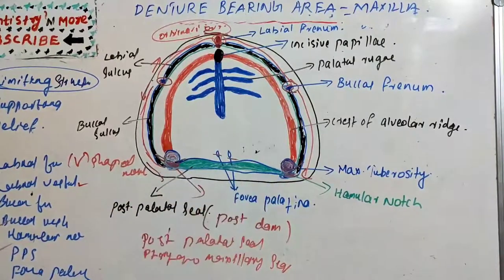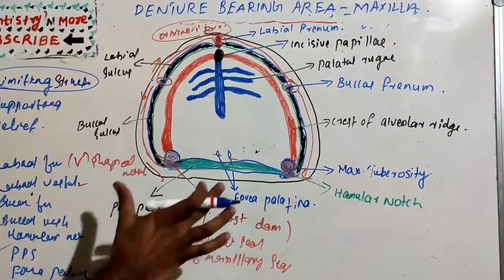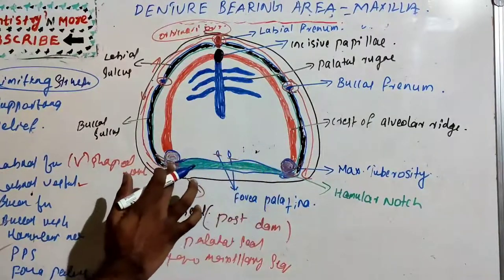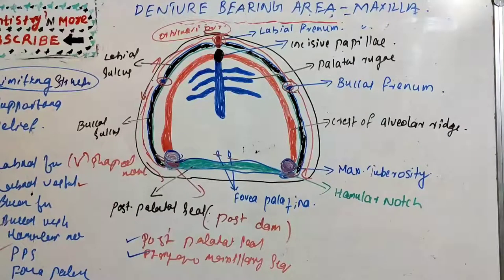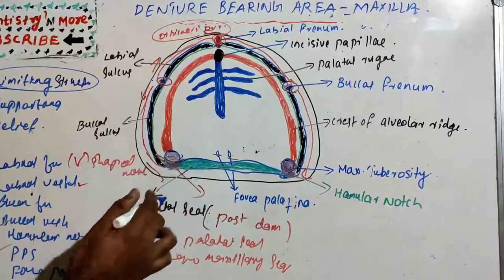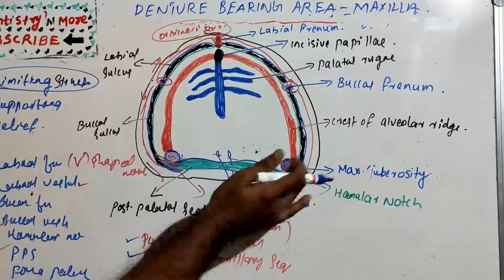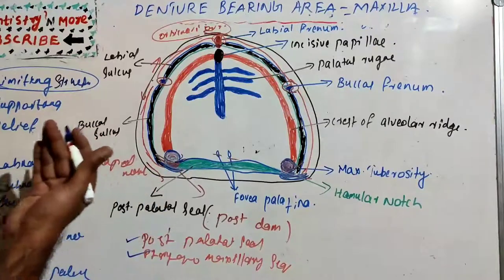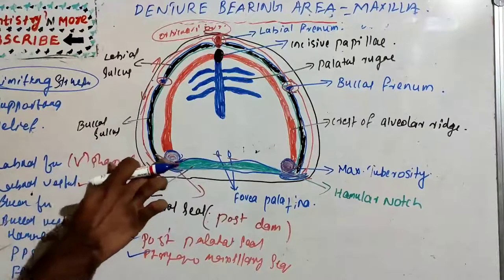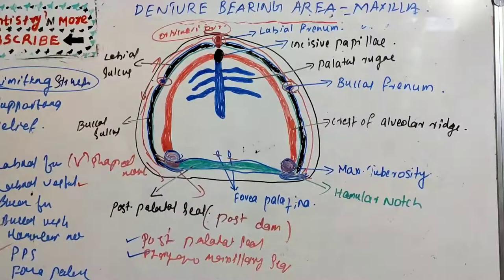The post palatal seal extends between the two maxillary tuberosities, whereas the pterygomaxillary seal extends across the hamular notch, running two to four millimeters anterior-laterally to end at the mucogingival junction on the posterior part of the maxillary ridge.